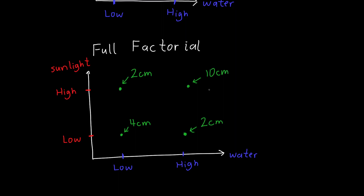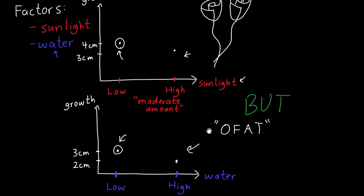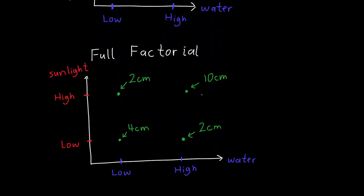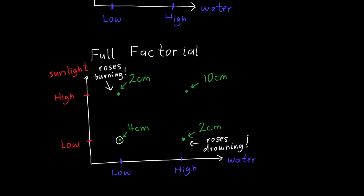This is a totally different result than we got in our previous two experiments and tells us something completely different. Previously we said we want a low amount of sunlight and a low amount of water. In the high-sunlight, low-water corner our roses are burning because they're getting too much sunlight without enough water. In the high-water, low-sunlight corner our roses are drowning. But with high sunlight and high water, the roses can take advantage of both — which is actually our best condition. We never would have figured that out by sweeping one variable at a time.